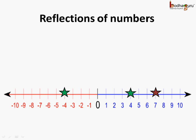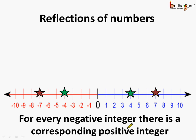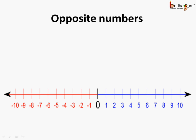Same way, 7 and minus 7 are both at equal distance from 0 but in opposite directions. For every negative integer there is a corresponding positive integer on the number line at the same distance from 0. So for minus 7 we have 7, and for minus 4 we have 4. Such reflections of numbers are called opposite numbers.